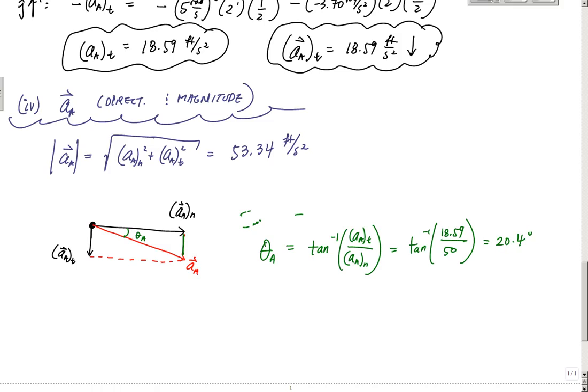And so finally when I write this out, AA is 53.34 feet per second squared in a direction relative to the horizontal right here of 20.4 degrees, and that is the answer with numbers. So don't walk on glass to this problem, see ya.